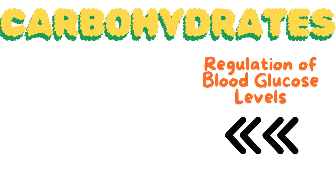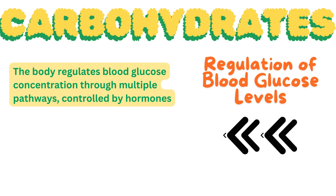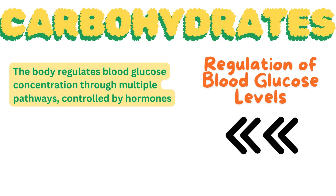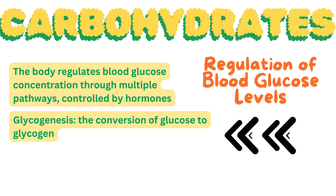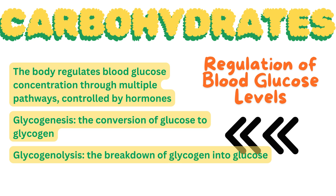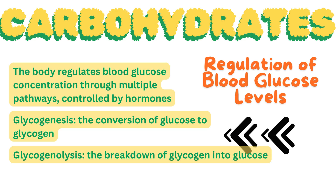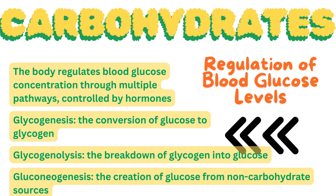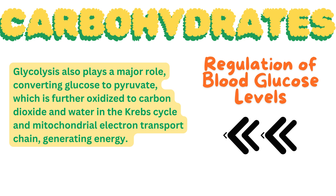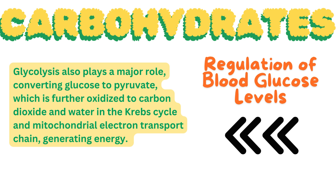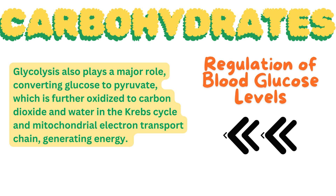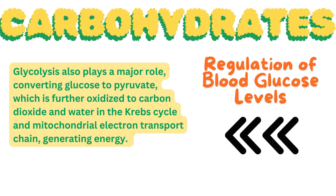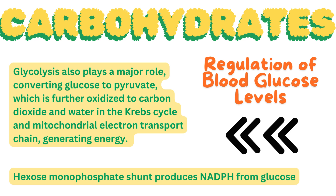The body regulates blood glucose concentration through multiple hormone-controlled pathways. Key processes include glycogenesis (conversion of glucose to glycogen), glycogenolysis (breakdown of glycogen into glucose), and gluconeogenesis (creation of glucose from non-carbohydrate sources). Glycolysis converts glucose to pyruvate, which is further oxidized to carbon dioxide and water in the Krebs cycle and mitochondrial electron transport chain, generating energy. The hexose monophosphate shunt also produces NADPH from glucose.